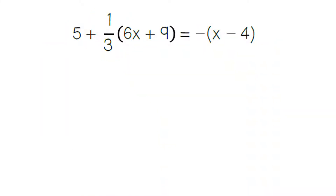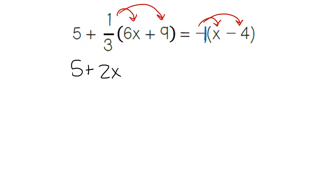For this problem, we follow our four steps starting with the distributive property — we multiply the parentheses. This one has a minus sign; there's actually a 1 next to it, so it's a negative 1, and we distribute that negative 1 into our parentheses. I can bring down that 5. 1 third times 6 is 2. 1 third times 9 is 3. Negative 1 times x is negative 1x. Negative 1 times negative 4 — taking that minus as a negative sign — is going to make it a positive 4.